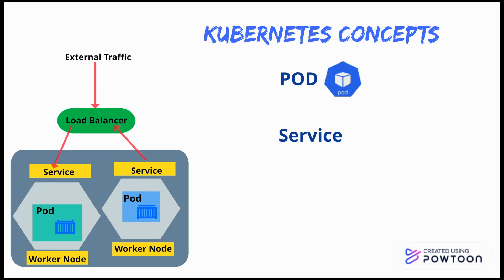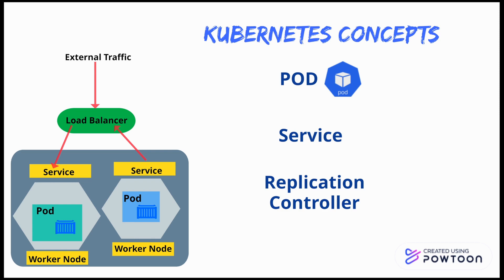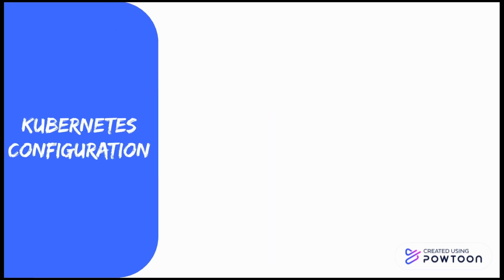There is a standard way to expose a service to the internet using a load balancer, which gives a single IP address that forwards traffic to our service — though this can be expensive as it's one load balancer per service. In that case we can use an Ingress, which is an object that routes traffic from outside the cluster to services within the cluster. A replication controller ensures that only a certain number of pod replicas are active at any time — if there are too many it terminates extras, and if there are too few it automatically creates more.